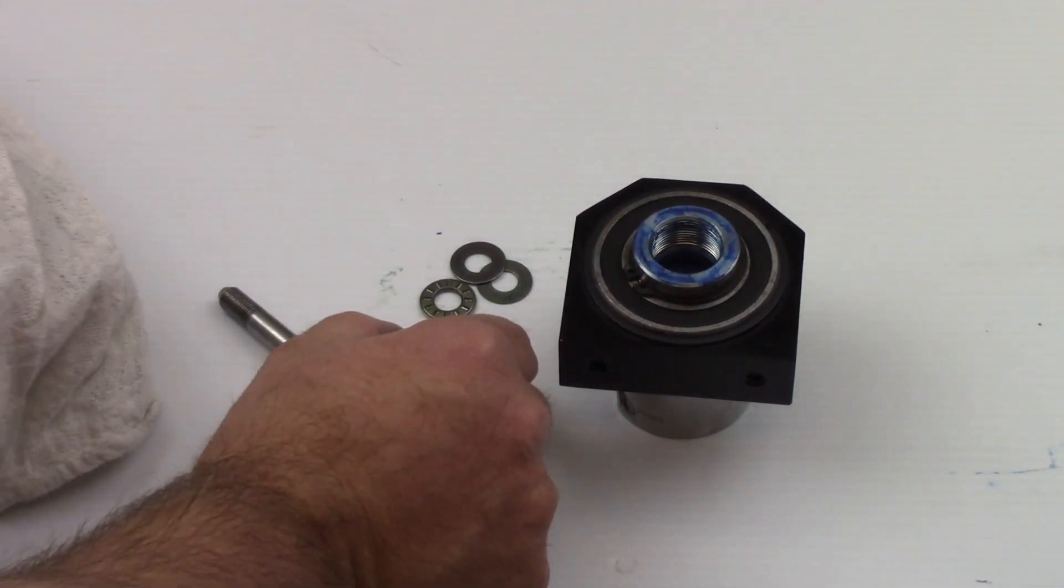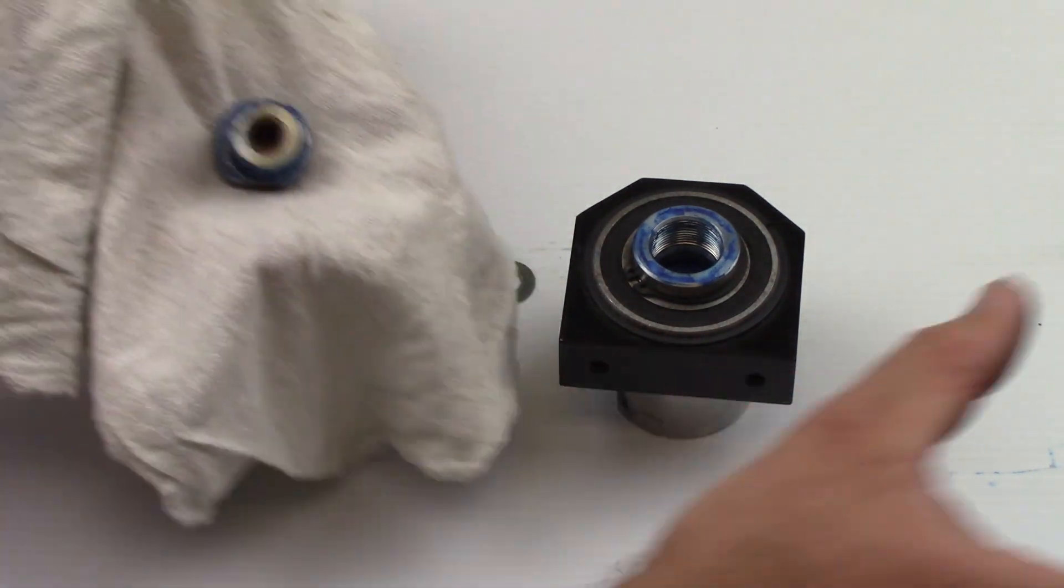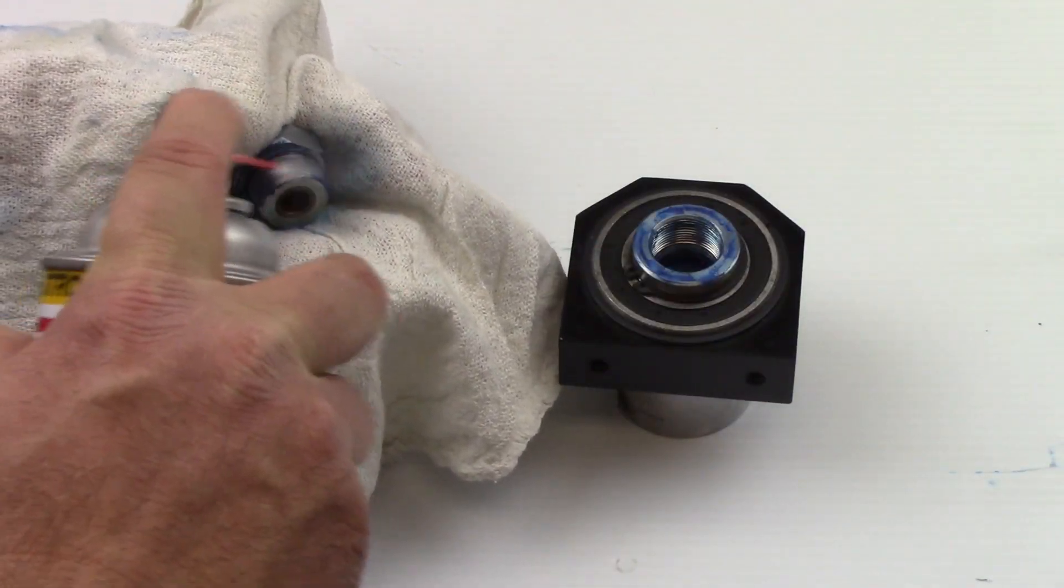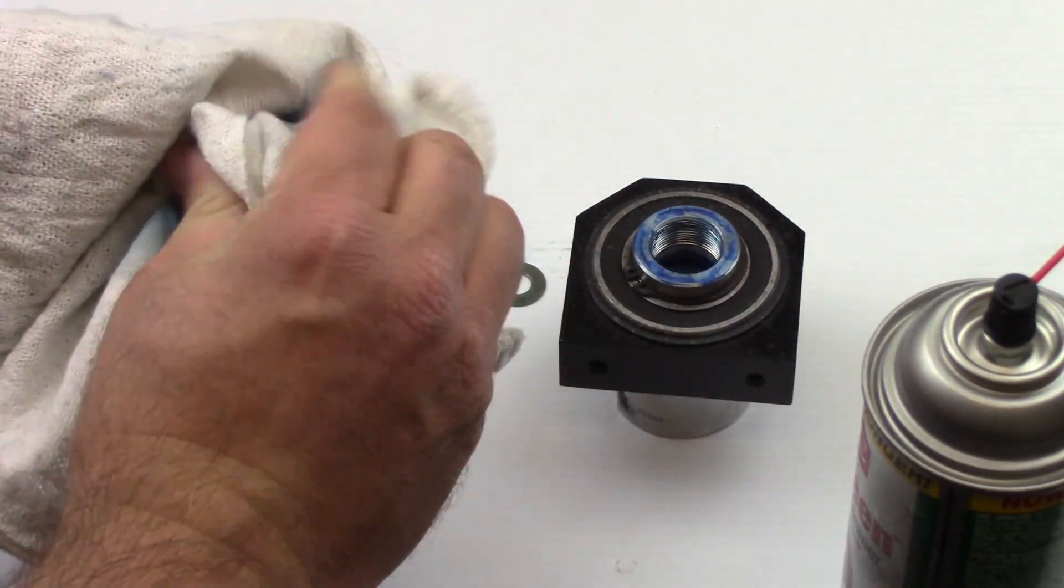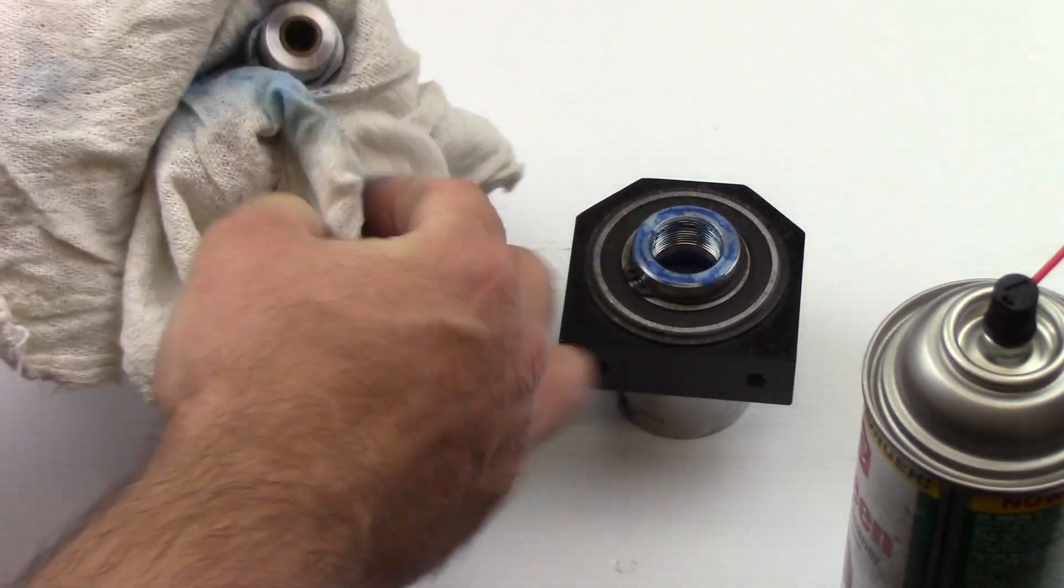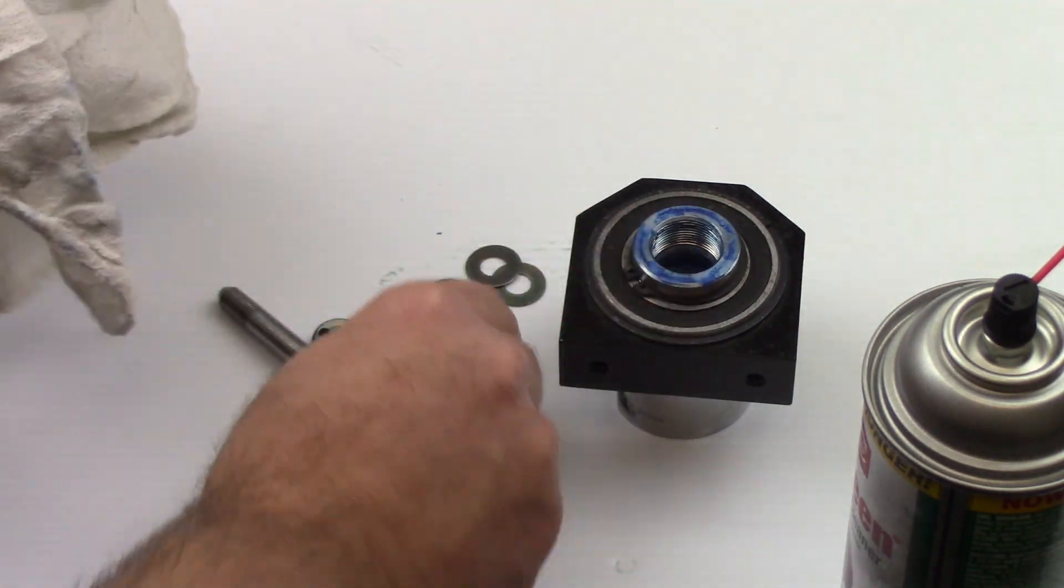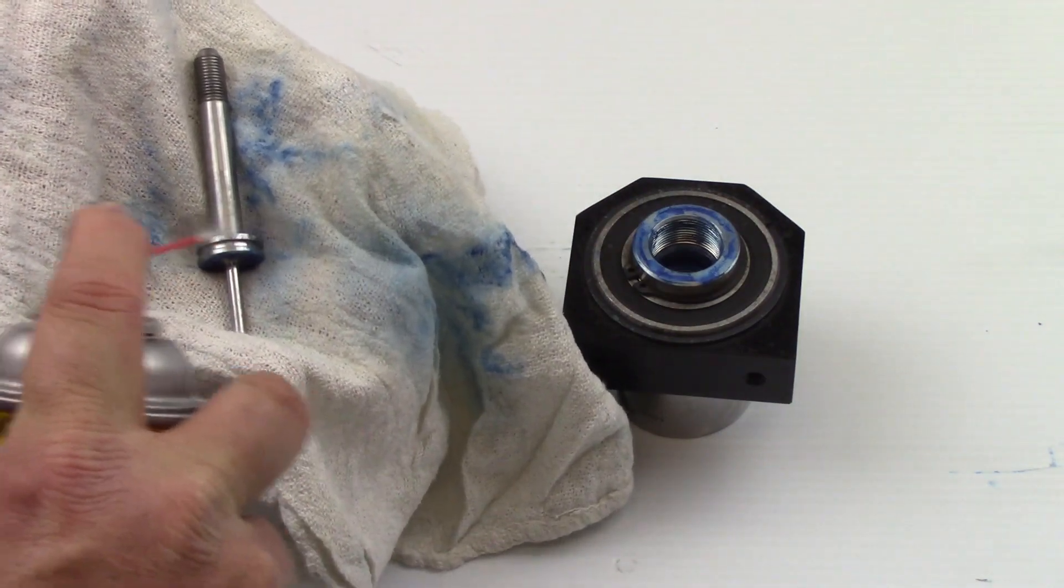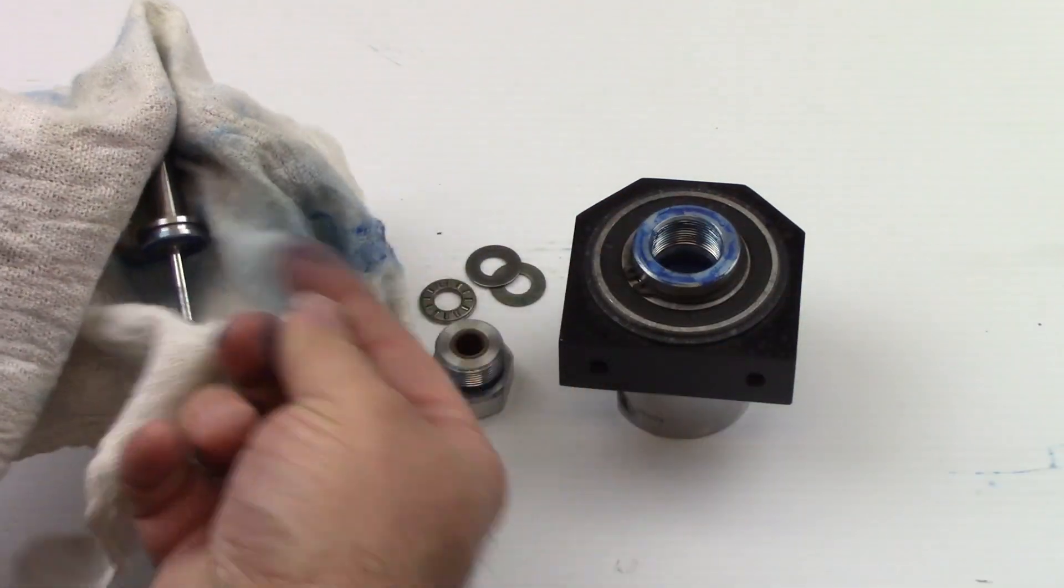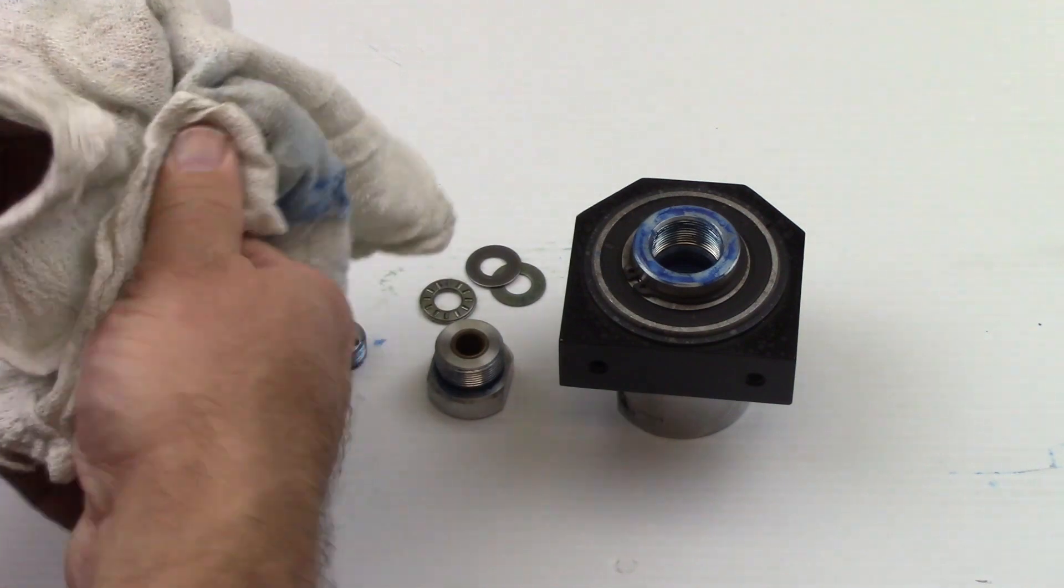Clean the parts with degreaser and inspect the swivel assembly parts. Inspect the parts for scratches, nicks, and wear. Replace any worn or damaged parts.